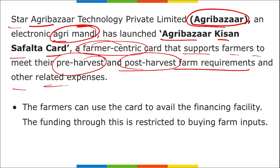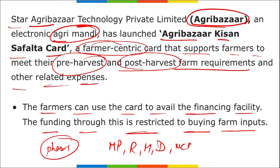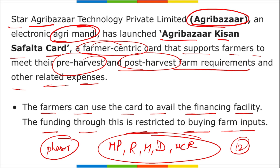Farmers can use the card to avail financing — however, funding is restricted to buying farm inputs only. In phase one, this card will be available to farmers in Madhya Pradesh, Rajasthan, Maharashtra, Delhi, and NCR regions. There will be a 12-month repayment period for this Kisan Safalta Card.